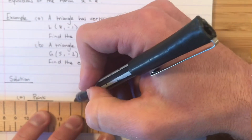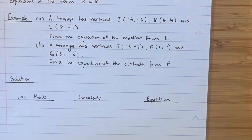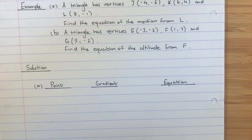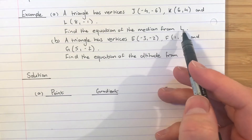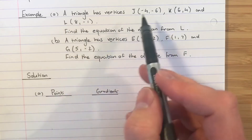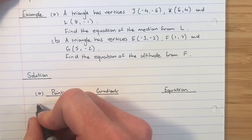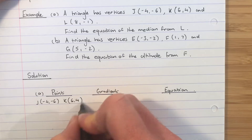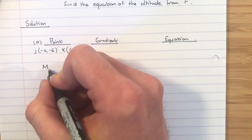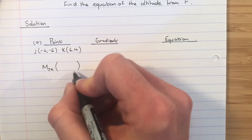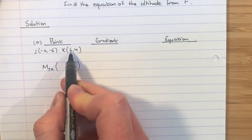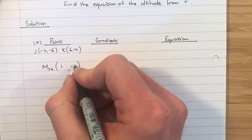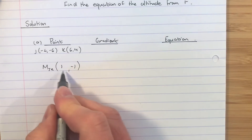The median goes to the midpoint of the opposite side. For the median from L, the opposite side is JK, so we find the midpoint M between J and K. Midpoint M: x-coordinate is (−4 + 6) ÷ 2 = 1; y-coordinate is (−6 + 4) ÷ 2 = −1. So the midpoint between J and K is (1, −1).